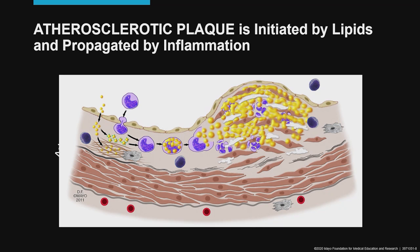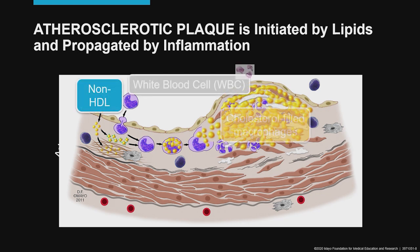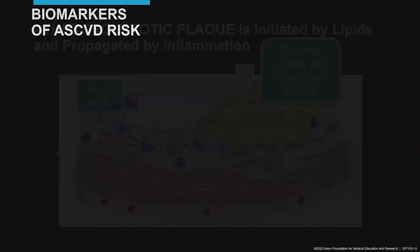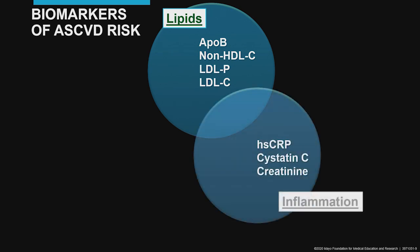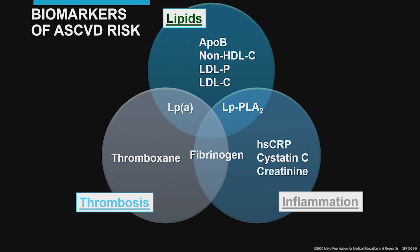The plaque is a very complex and dynamic structure initiated by lipids and propagated by inflammation and thrombosis. When we think of biomarkers of atherosclerotic risk, we think about biomarkers that pertain to the lipid pathway, such as LDL-C, biomarkers that pertain to the inflammation pathway, such as high sensitivity CRP, or biomarkers that belong to the thrombosis pathway. Ceramides are central biomarkers that interdigitate all three pathways — the lipid pathway, inflammation pathway, and thrombosis pathway. Therefore, ceramides are a very comprehensive biomarker for assessment of atherosclerotic risk.